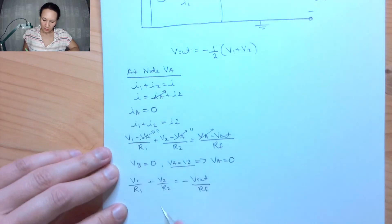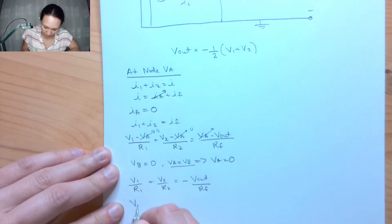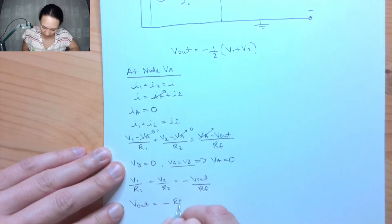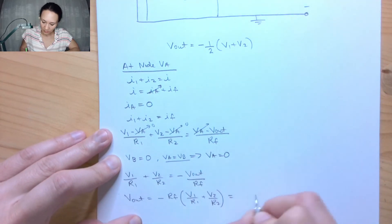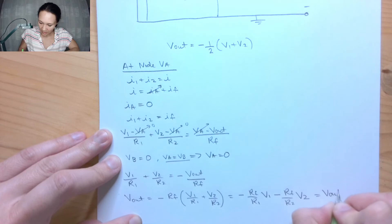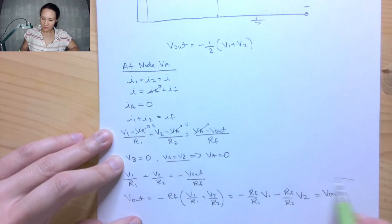So now what I want to do is I want to reorganize this equation so I have Vout in terms of my Vins here. So let me get Vout by itself. I get Vout is equal to negative Rf times the quantity V1 over R1 plus V2 over R2. So if I distributed this out, this would be negative Rf over R1 times V1 minus Rf over R2 times V2. And this is my Vout.